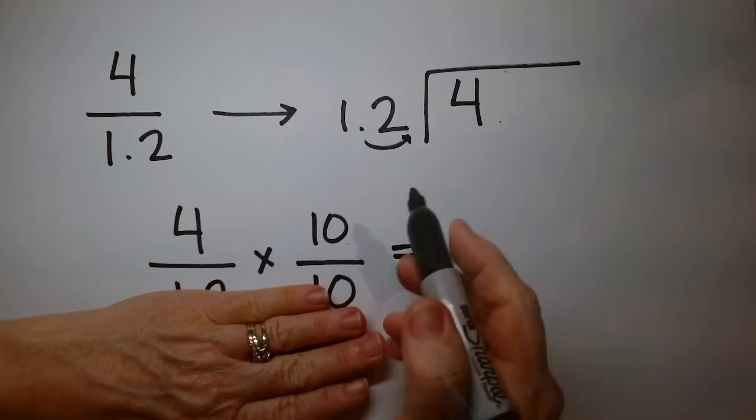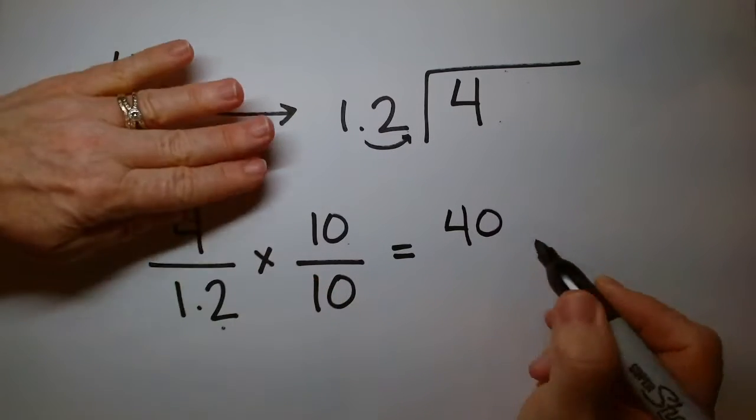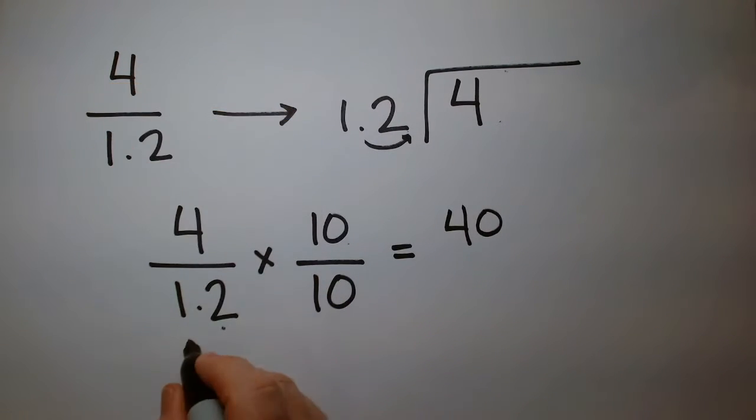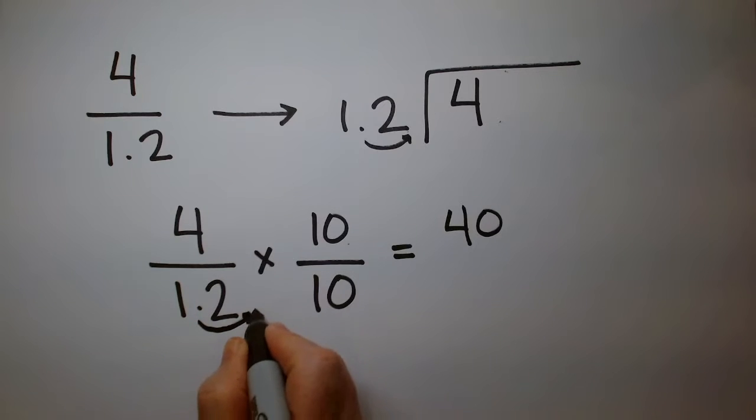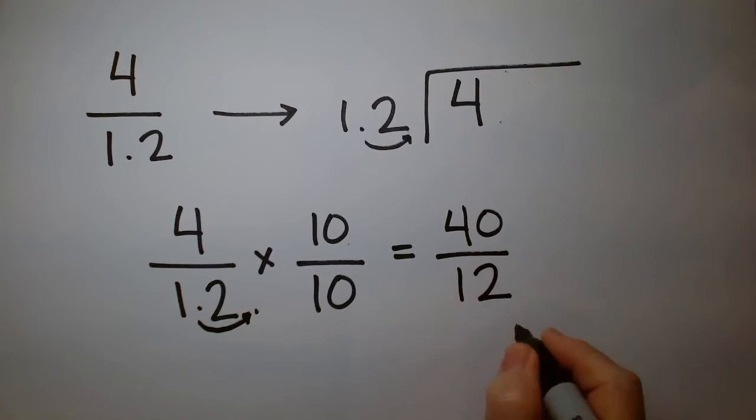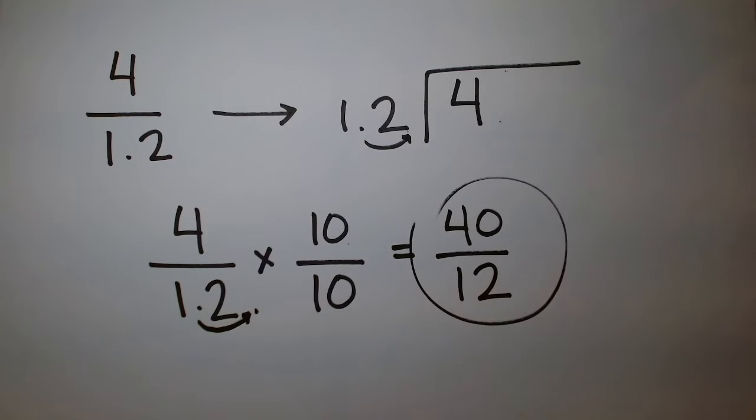We have 4 times 10, which is 40. The bottom is 1.2 times 10, which means that decimal point goes one hop to the right, so now that is 12. This is a problem I know how to do.